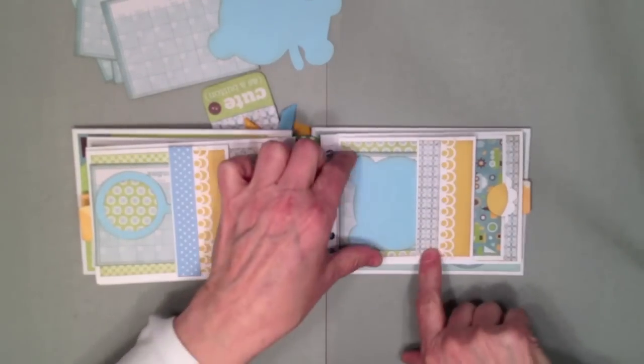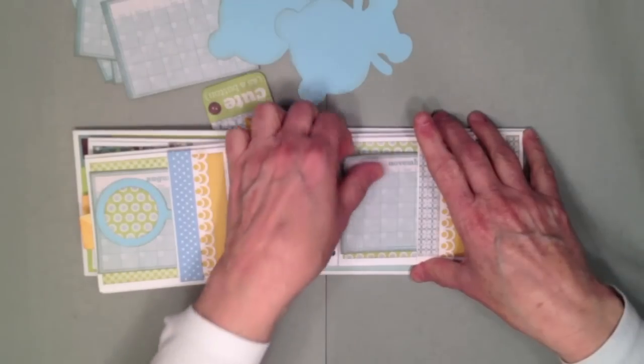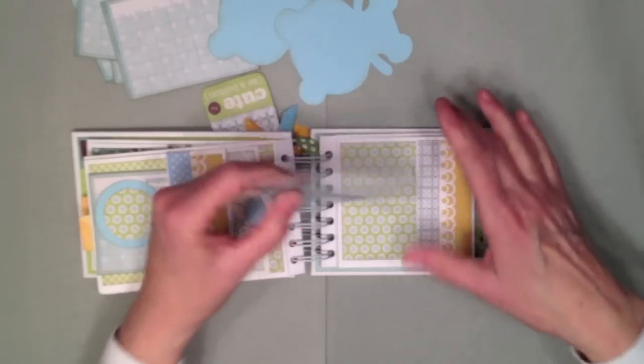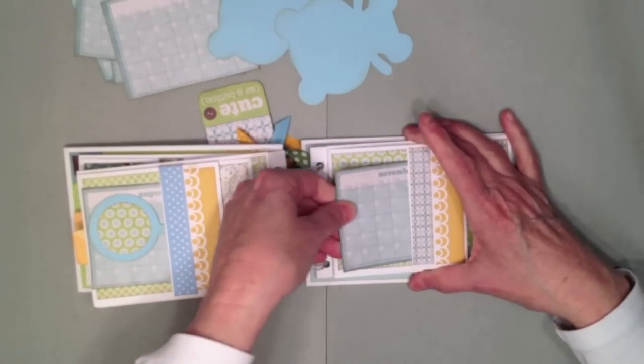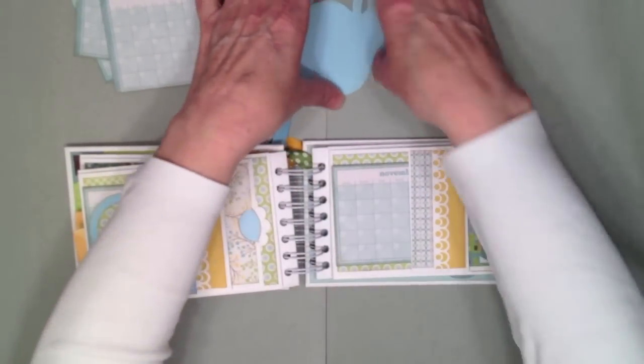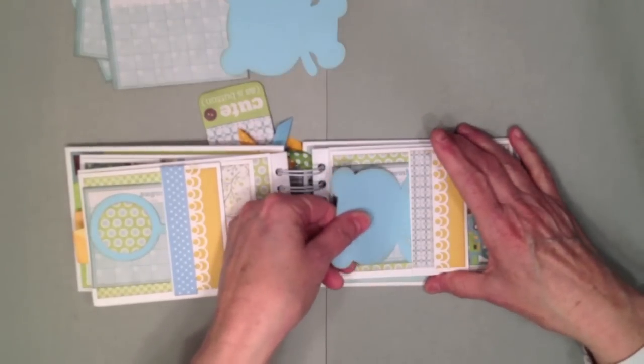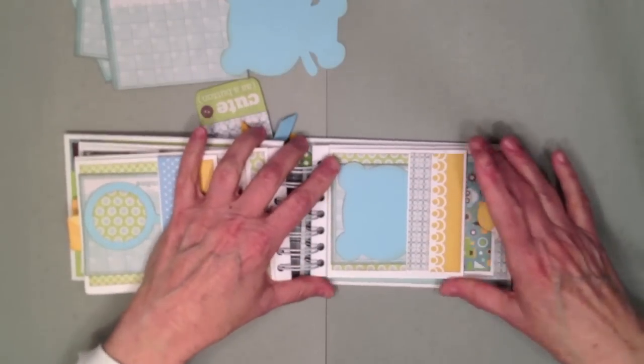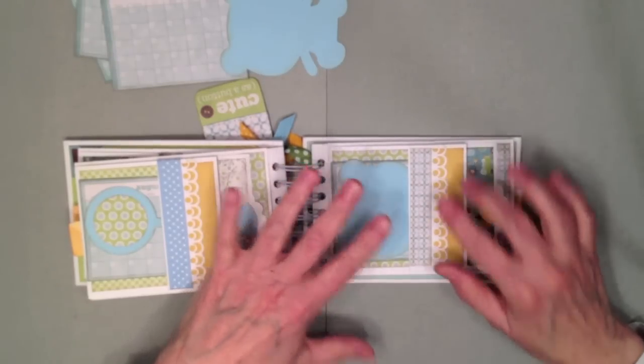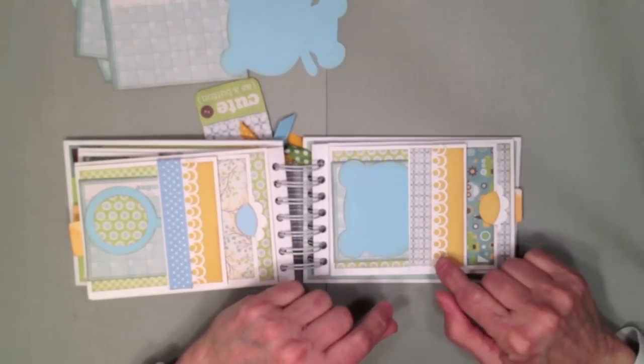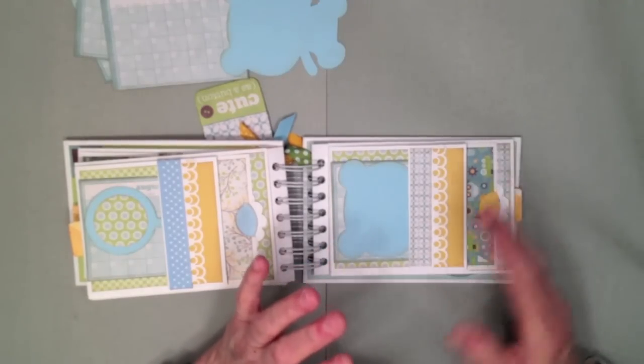Then you flip this up and you have a place for a photo and a photo and here's the other teddy bear tag that goes back here. So that's the second page. On the third page, again I have the little teddy bear tag. I have the month of November here. This mini is really really fun to make.